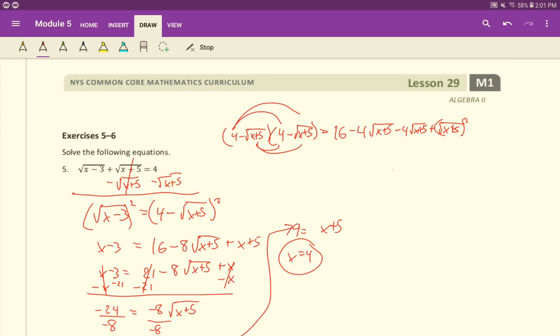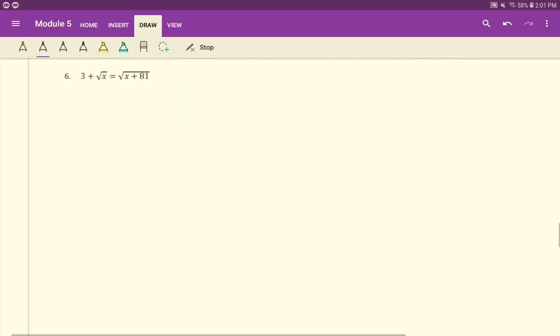If we check our work, 4 minus 3 is root 1. 4 plus 5 is 9. So we get 1 plus 3, which is 4. And check that works. All right.